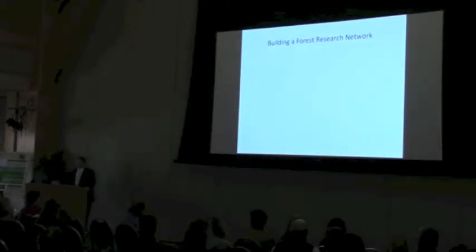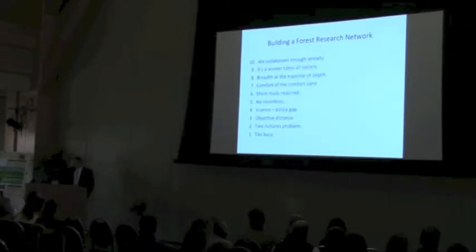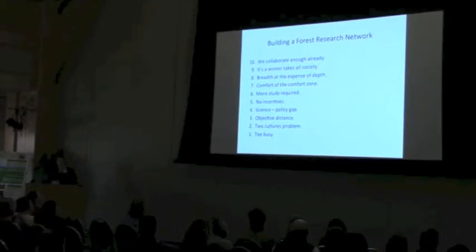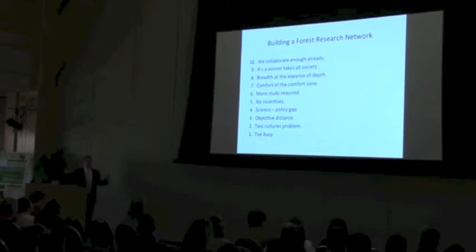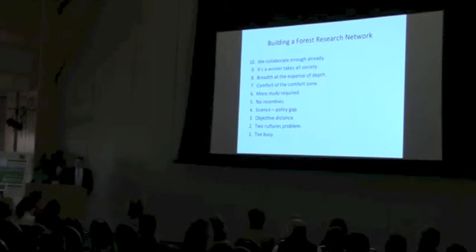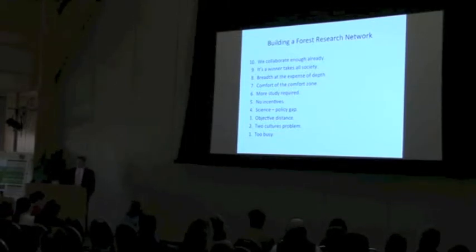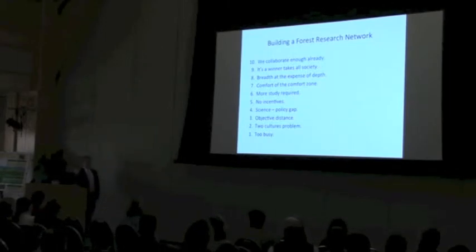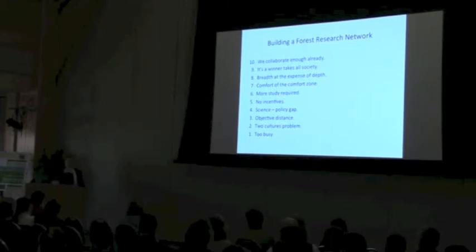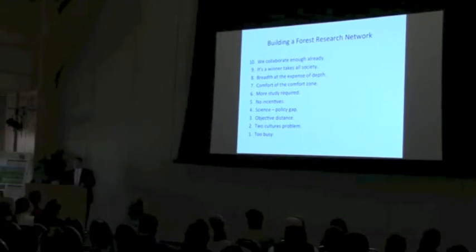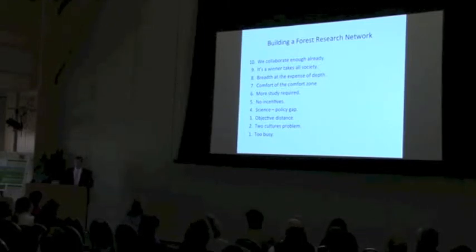So let me loop this back to building a forest research network that I was asked to talk about. When you look at building a forest research network, we could use all of these excuses, right? We collaborate a lot already. Look at this room, the Vermont Monitoring Cooperative, all the years of collaboration. What do you want from us? We're collaborating a lot already. The breadth-depth tradeoff, the more study required, the more money. Just give us more money and we'll tell you what you need to know. The objective distance problem. Let's turn these into genuine positive opportunities to collaborate. Let's get beyond these excuses.